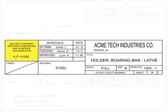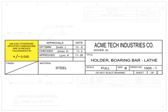Tolerances are defined as the difference between the lowest and highest acceptable limits of a dimension. It is almost impossible to machine parts to the exact dimension called out on the drawing. Tolerances allow a machinist to deviate within a specified limit that will not adversely affect the final part. The tolerances block contains the default tolerances for dimensional call-outs where no tolerance is otherwise noted on the drawing, and should be followed unless specifically marked otherwise.